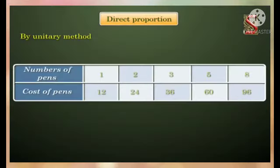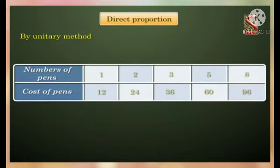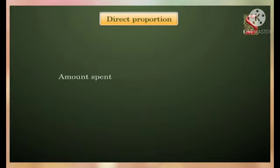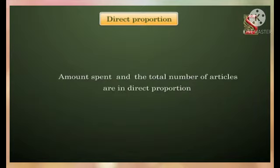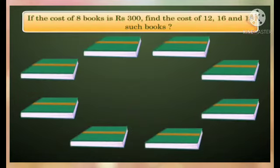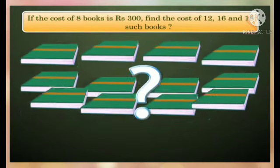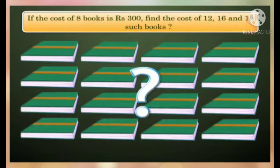In the earlier example, number of pens and cost of pens are in direct proportion. In general, amount spent and the total number of articles are in direct proportion. Now let us see examples on direct proportion. If the cost of 8 books is Rs. 300, find the cost of 12, 16, and 18 such books.